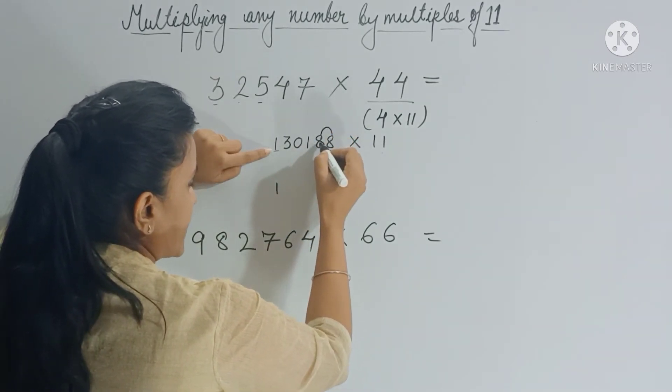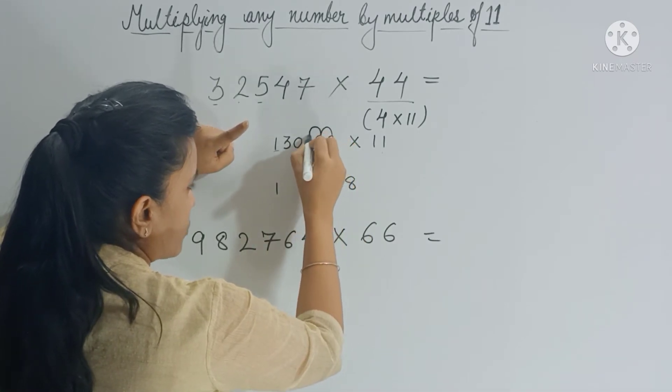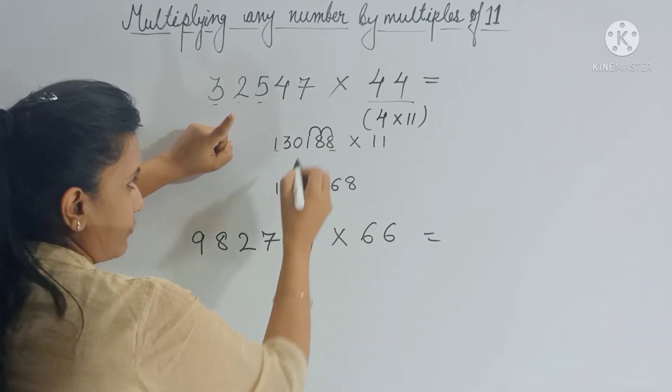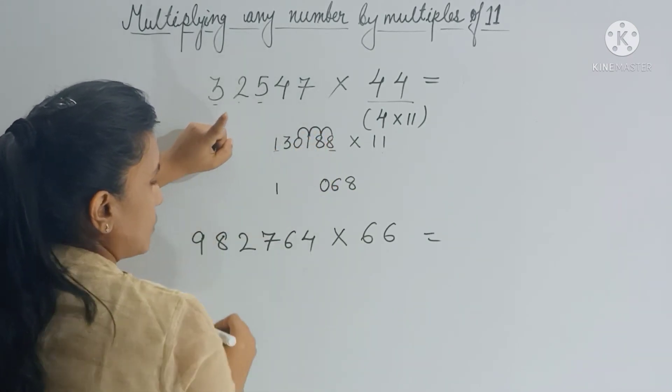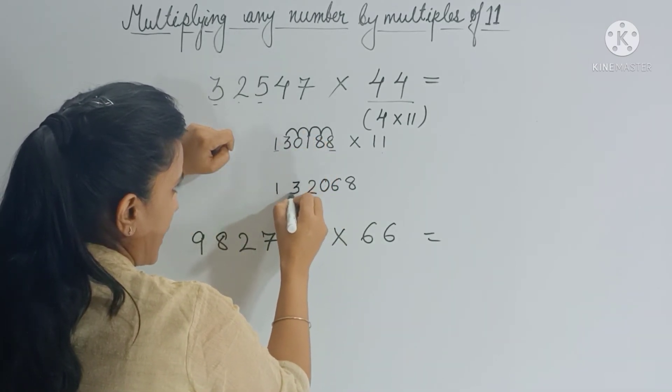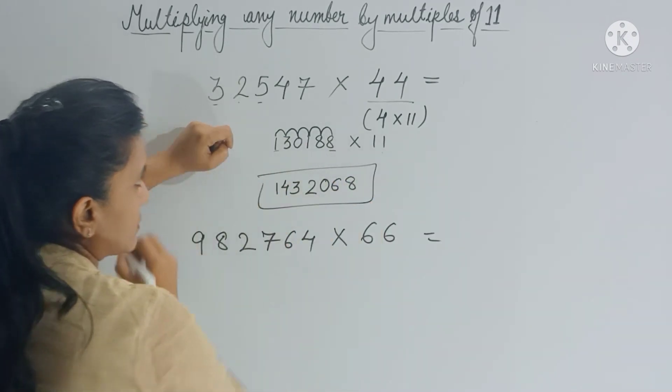Now you have to add in pairs. So 8 plus 8 is 16, so write 6 here, 1 is carry forward. 8 plus 1 is 9, 9 plus 1 is 10. Now again 1 is carry forward. 1 plus 0 is 1, plus 1 gives you 2. Now 0 plus 3 gives you 3 and 3 plus 1 gives you 4. So this is your answer.